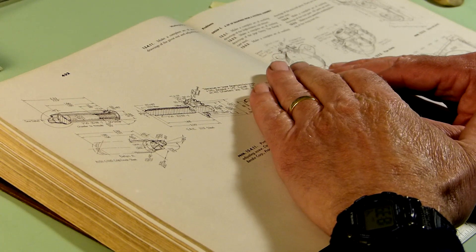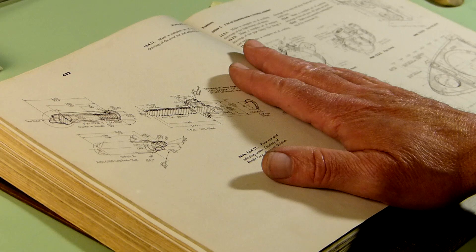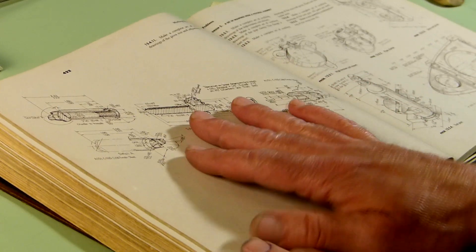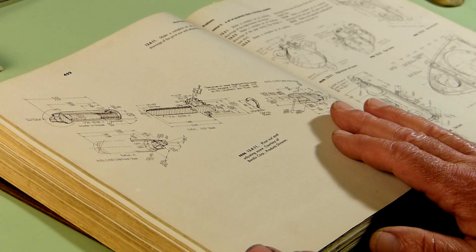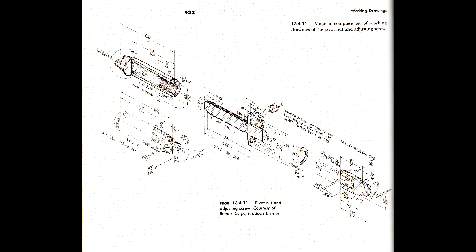Welcome to our next class in drafting. We're going to get a little advanced tonight to give you guys a more fun project. From this old book, we're looking at what we call an isometric drawing.